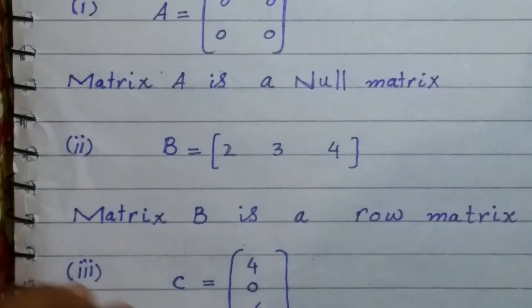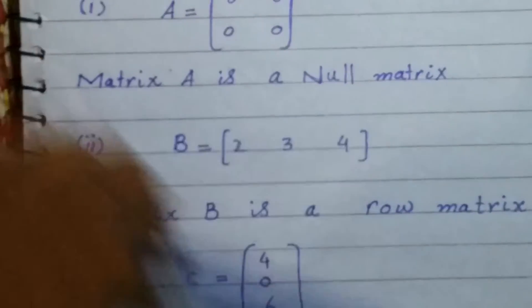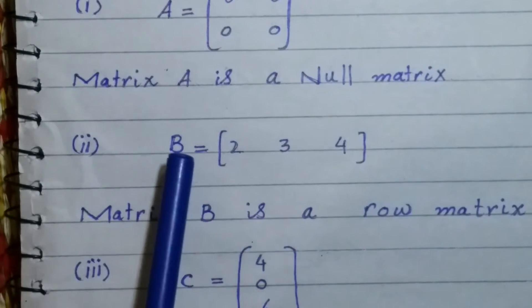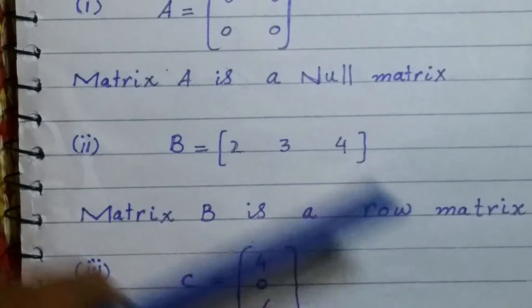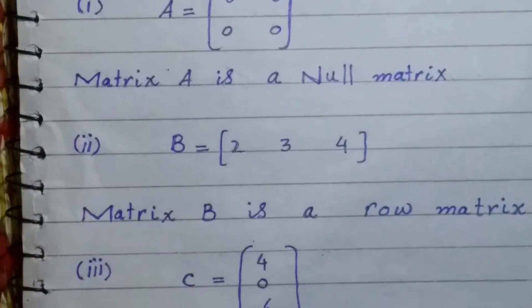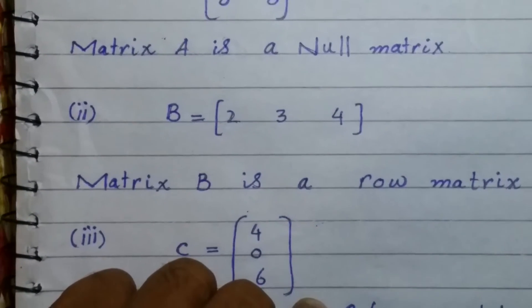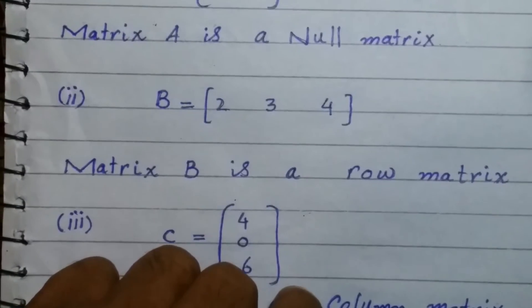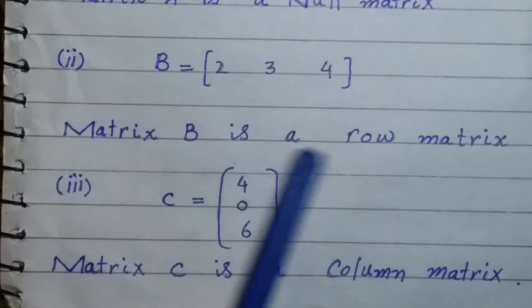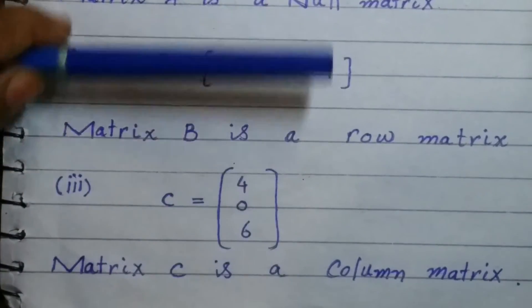Consider matrix B. It has only one row, only one line. So its name is row matrix. We will call it a row matrix. Matrix B is a row matrix because it has only one row.